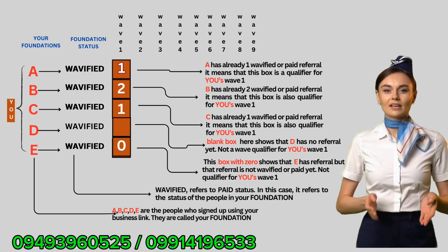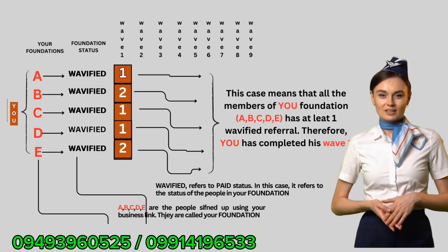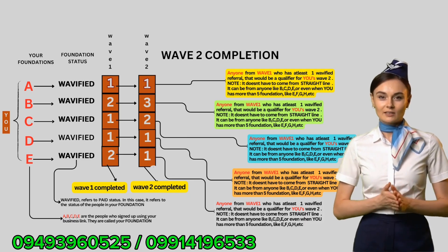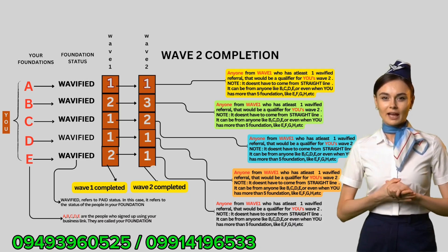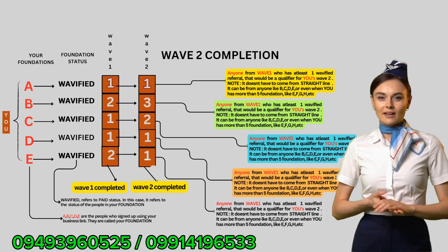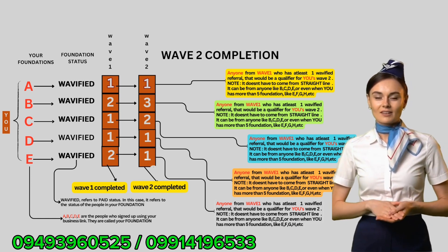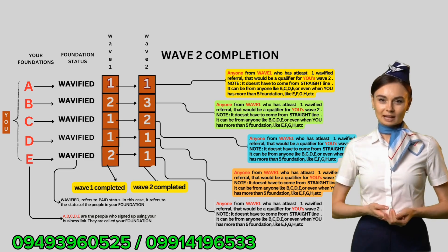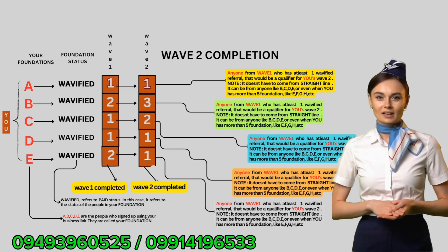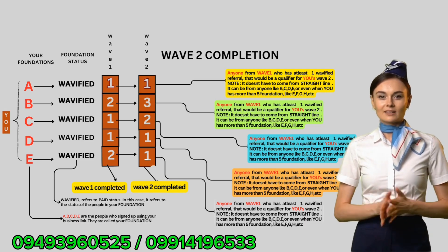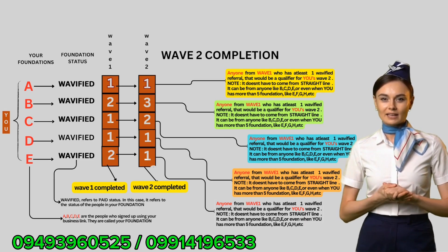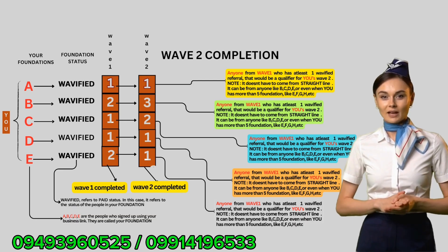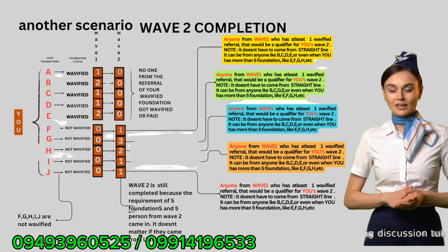Kapag may number ang box, ibig sabihin ay may activated na. Limang box lang mula sa iyong wave one zone ang magkaroon ng kahit isa lang na activated — iyon na ang wave one mo. Paano naman mabubuo ang wave two? Katulad din ang pattern ng wave one, pero sa pagkakataong ito hindi na ang foundation mo ang hahanapan ng activated referral kundi ang nasa wave one mo. Hindi katulad ng matrix system na kailangan na ang lima ay may tig-lima — you just need one for each of the five. Ayun, wave two na yun.